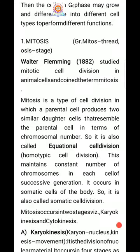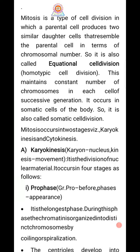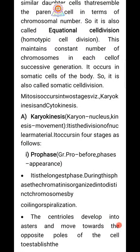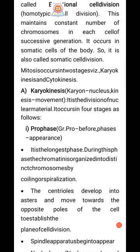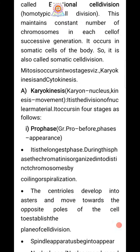Mitosis occurs in two stages: karyokinesis and cytokinesis. Karyokinesis means the division of the nucleus, and it occurs in four stages. The first stage is prophase. 'Pro' means before and 'phase' means appearance or aspect. Prophase is the longest phase of mitosis. During this phase, the chromatin is organized into distinct chromosomes by coiling or spiralization.